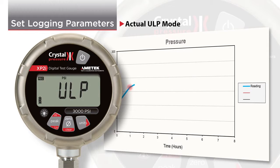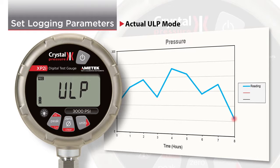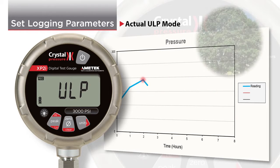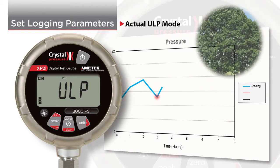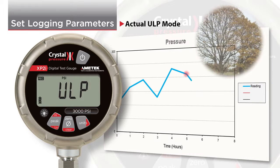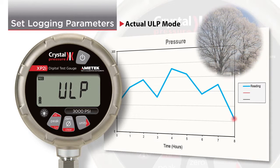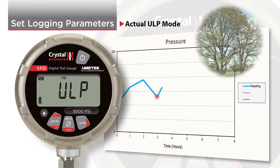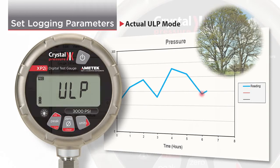Actual ULP stands for actual ultra-low power mode. Actual ULP records the actual pressure being measured at every logging interval, just like actual mode, but ultra-low power mode maximizes the battery life of your XP2i, allowing you to record continuously for up to one year on one set of batteries.